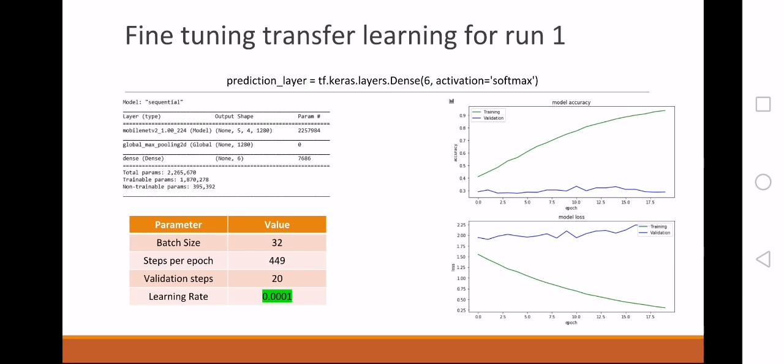What we did is we used the first run with a learning rate of 0.0001 and unfroze the weights. Now you can see that we have 2 million parameters to train, and you can see that we made a great improvement in the training accuracy, but the validation accuracy is flat. It's not improving.